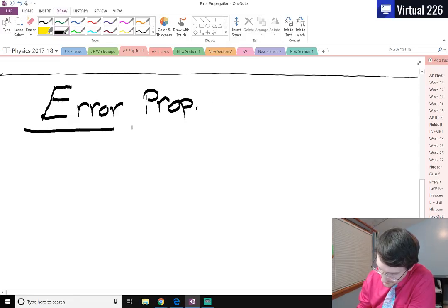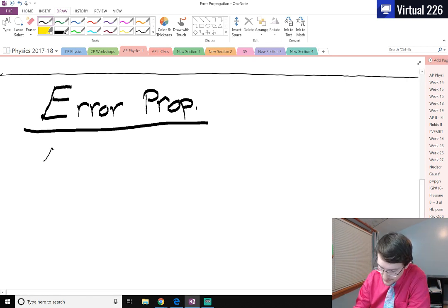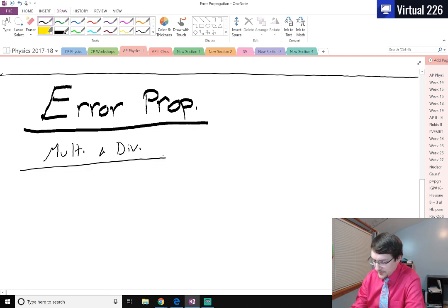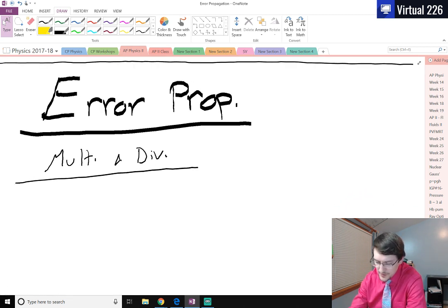We're going to look at error propagation with multiplication and division. We're going to use our same conventions as previous, with Q being just the traditional way we do math and del Q being the deviation or the uncertainty in the actual measurement as we combine values together.